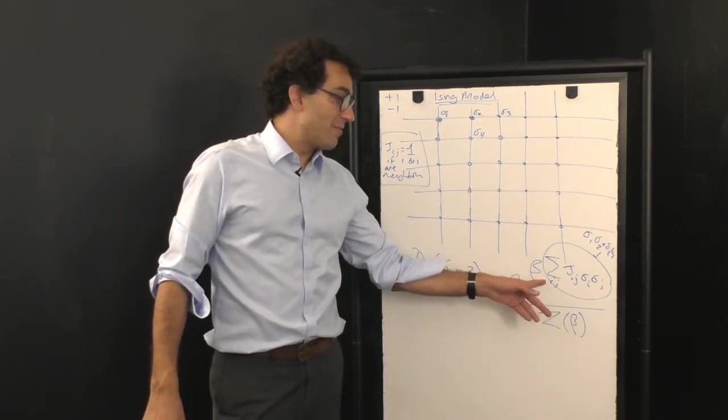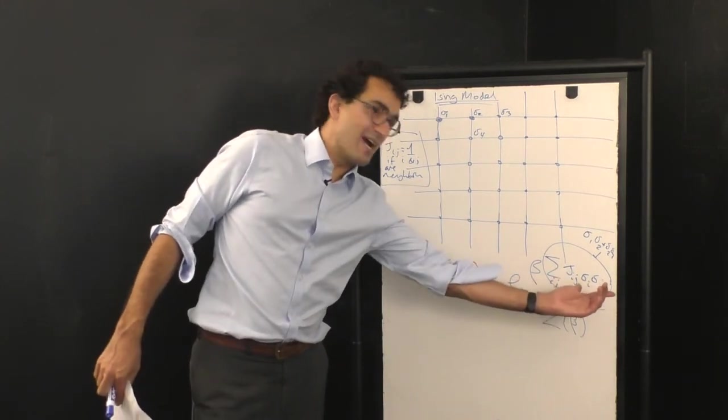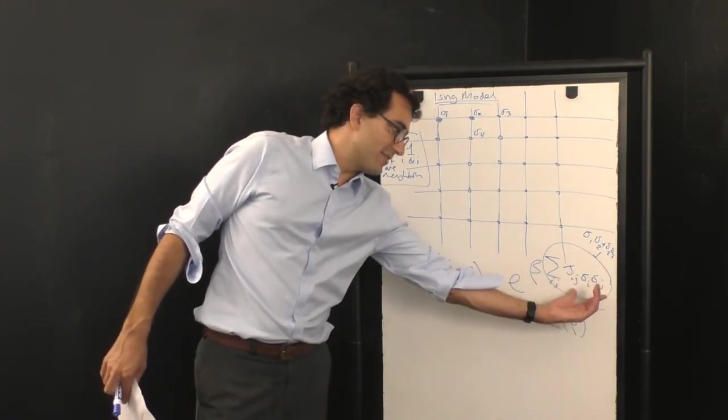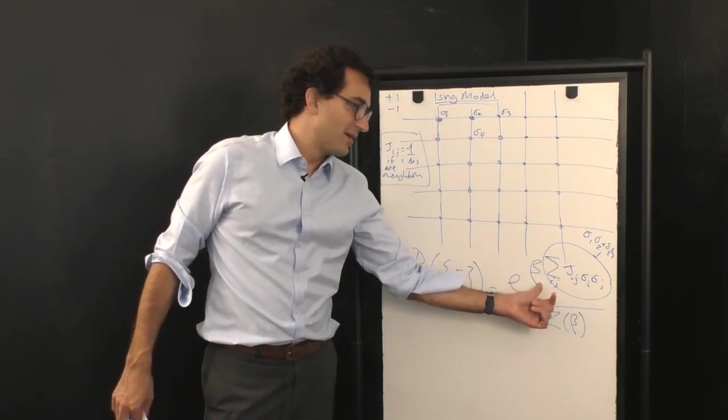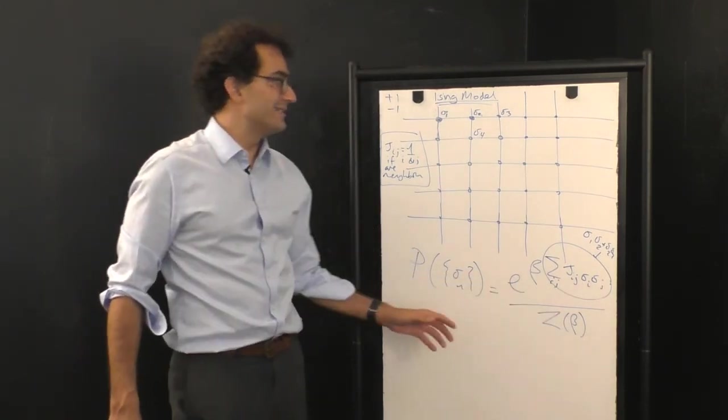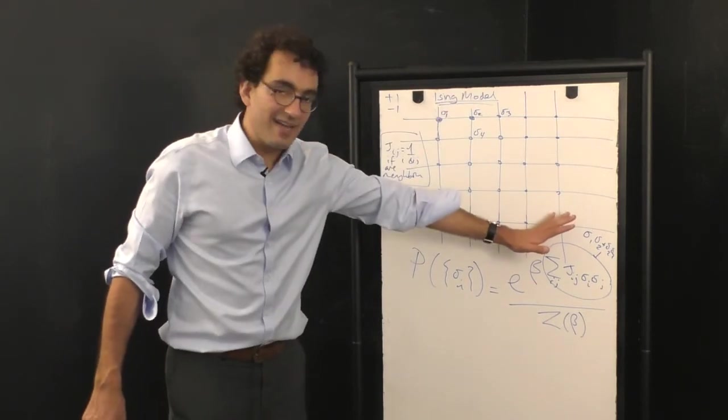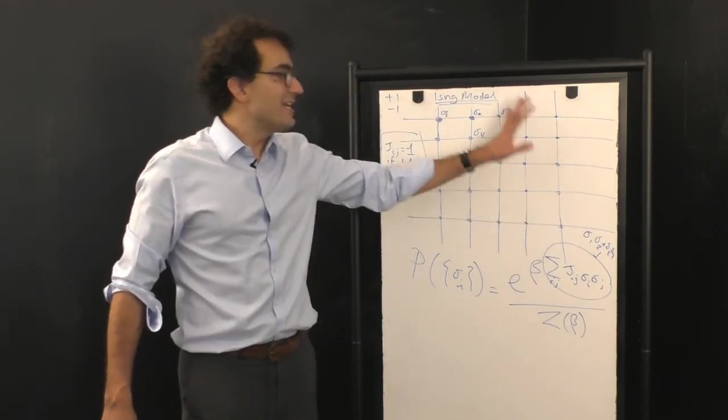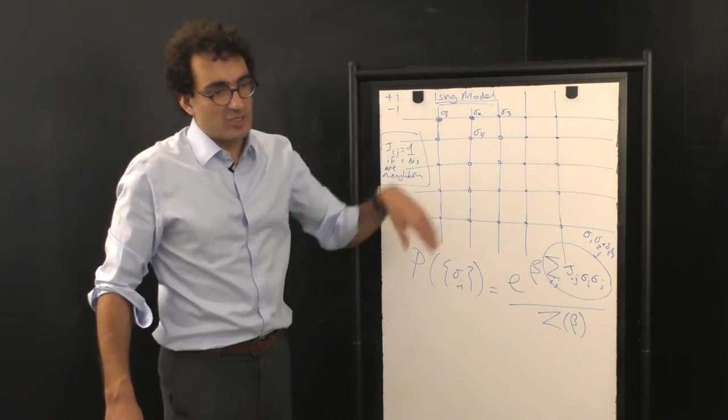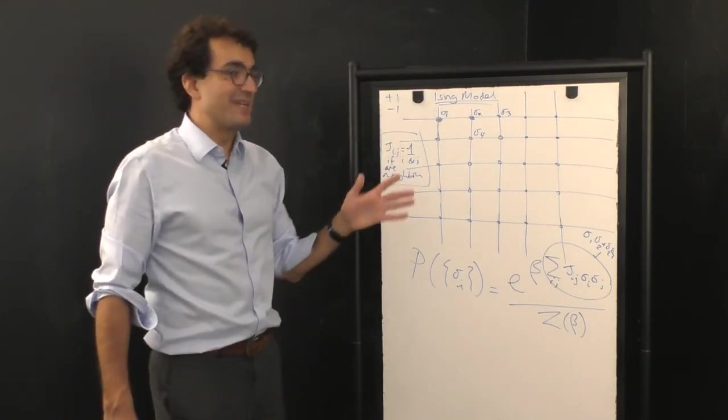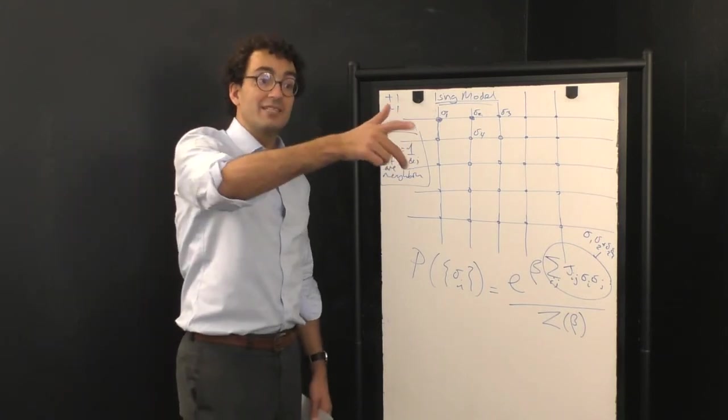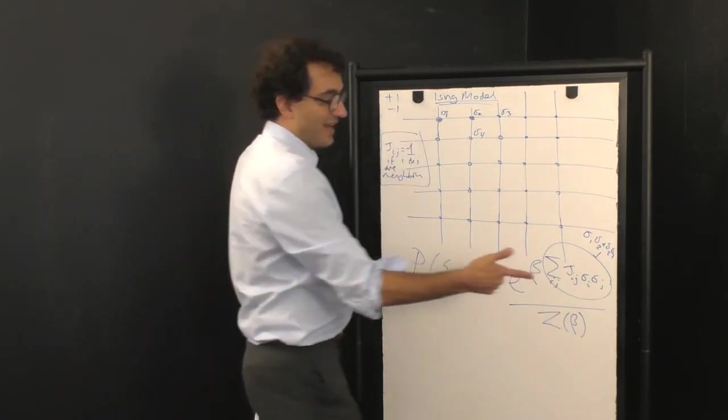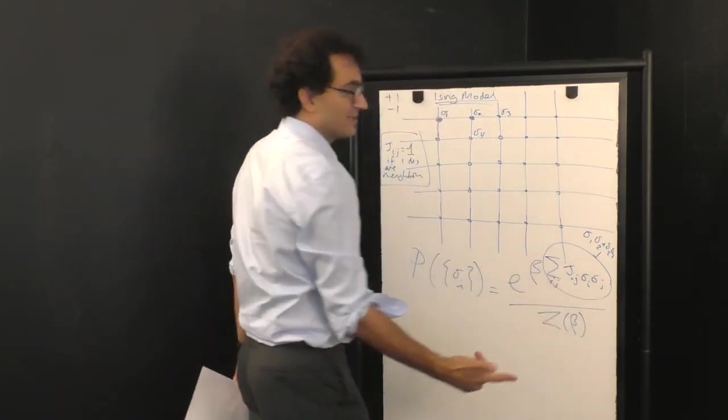So take the extreme case where beta equals zero. Sure, maybe everybody is aligned, so that term there is really large, but that's multiplied by zero, so it doesn't matter. And in fact, the contribution when beta is zero for all of the nodes in exactly the same state, perfectly aligned, is equal to a case where they're just kind of turned on and off randomly, plus one and minus one randomly. But as beta goes from zero to non-zero as it gets larger and larger, in fact, then this term here starts to matter.